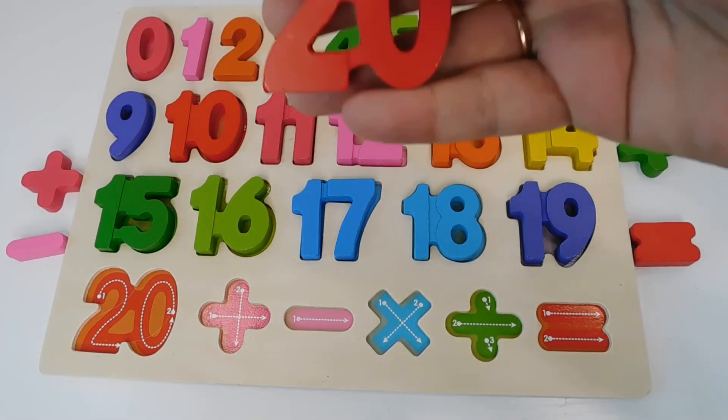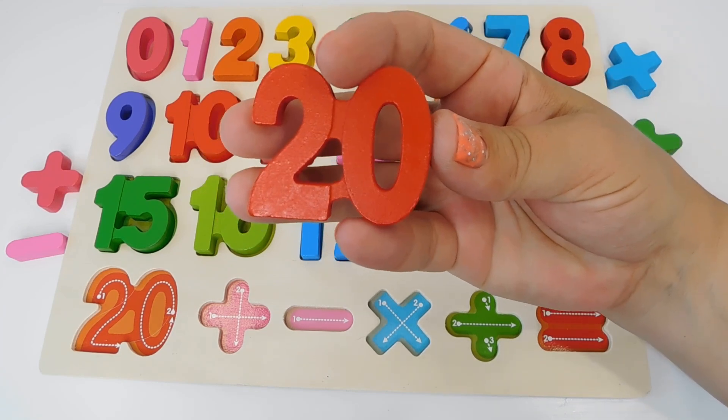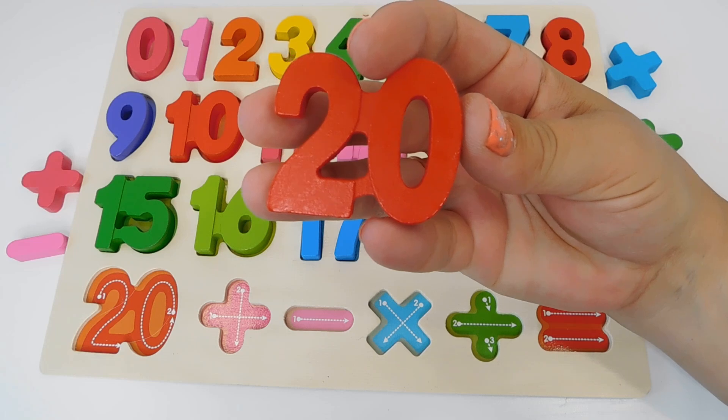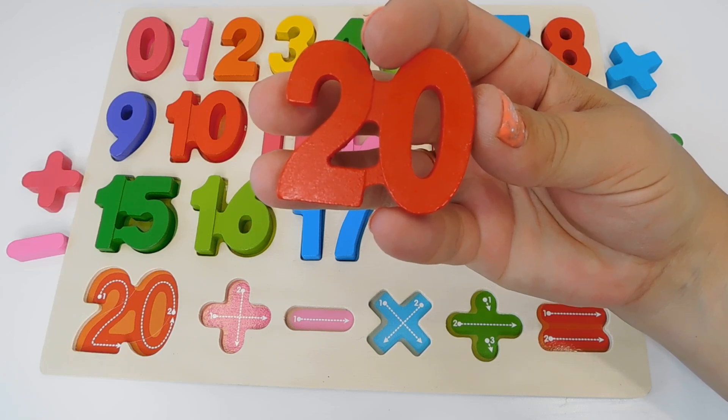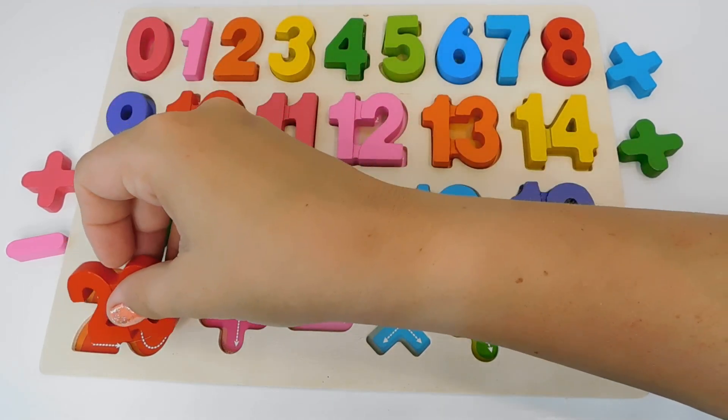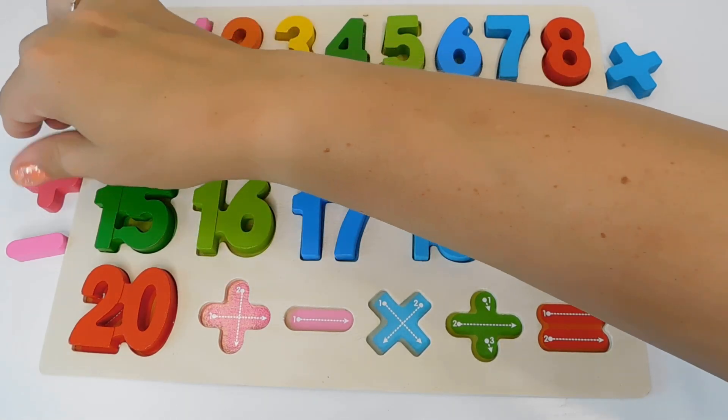Next is number 20. Number 20. 2, 0 is 20. And that is number 20. And it's red.